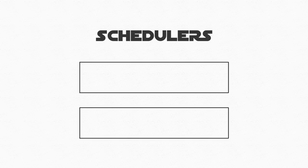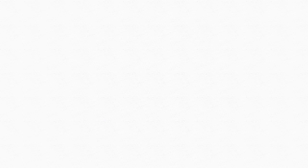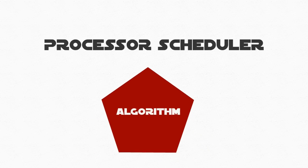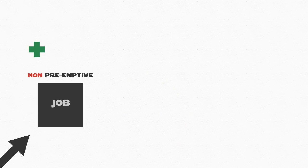Incorporating time slicing or priorities of jobs presents two types of schedulers: preemptive, meaning giving the power to interrupt the job, or non-preemptive, meaning we have to wait for the job to complete before we can do anything. A processor scheduler relies on an algorithm — an ordered set of instructions — to allocate the CPU and move jobs through the system. They are either preemptive or non-preemptive solutions, and each has their pros and cons.